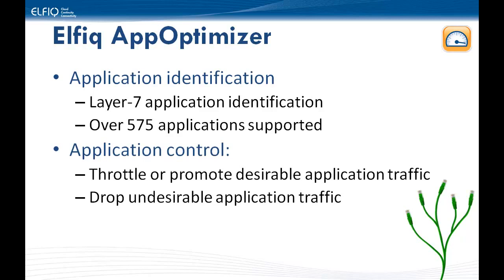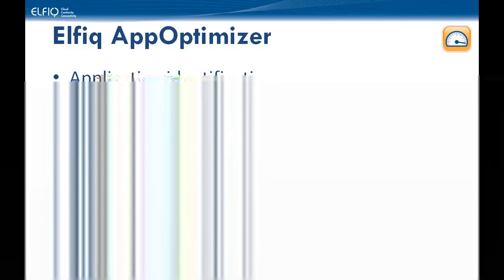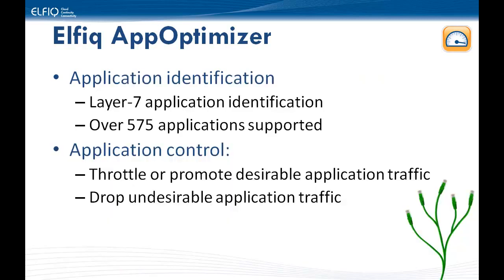Once the traffic is identified, we can apply control over that traffic. We can either throttle or promote desirable traffic, or apply medium to high priority traffic through QoS rules. For low or undesirable traffic — going back to the example of peer-to-peer transfers of copyrighted material — we can literally drop the traffic from the network. And lastly, reporting, because organizations don't necessarily have good visibility into their bandwidth usage.